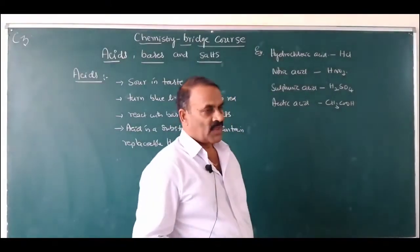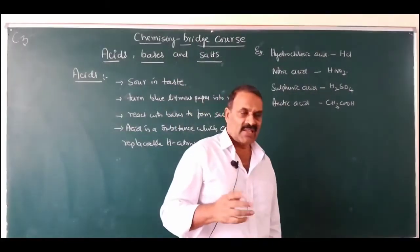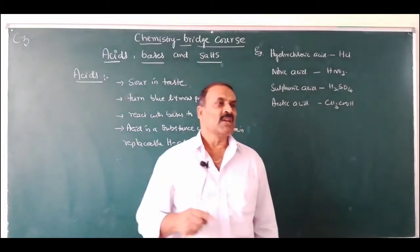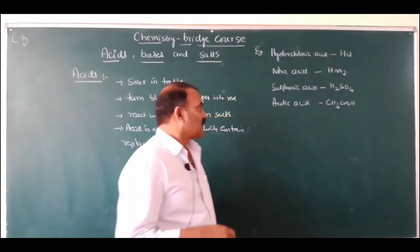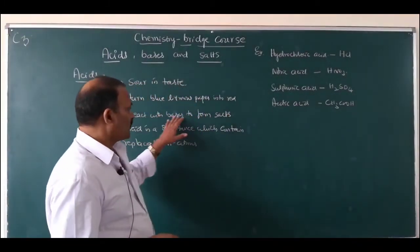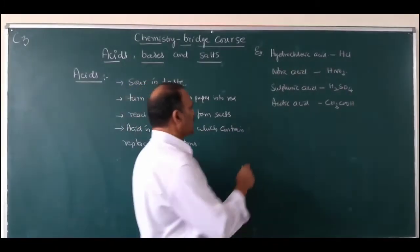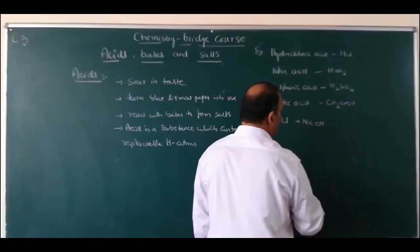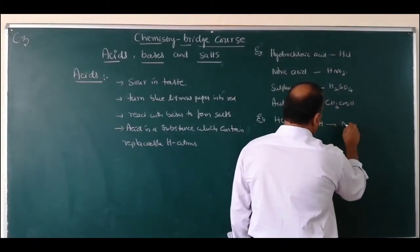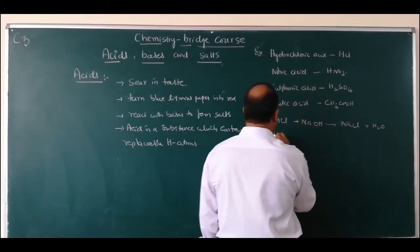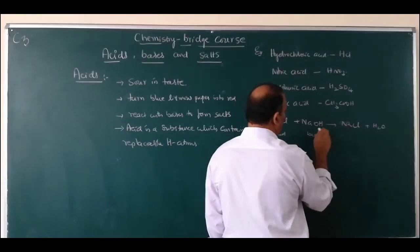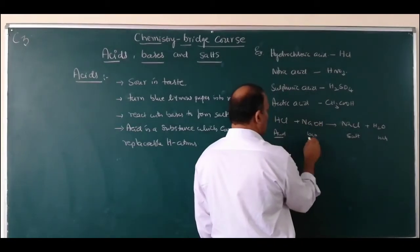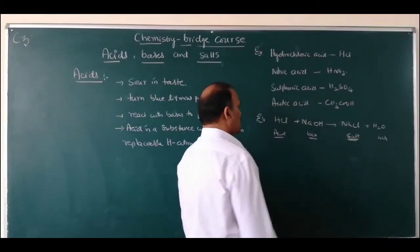Coming to litmus paper — you may have seen red litmus paper and blue litmus paper. Acids turn blue litmus paper into red. Since acid reacts with bases to form salt and water — for example, HCl reacts with a base NaOH to give salt NaCl plus H₂O. This is an acid, this is a base, this is salt, and this is water.